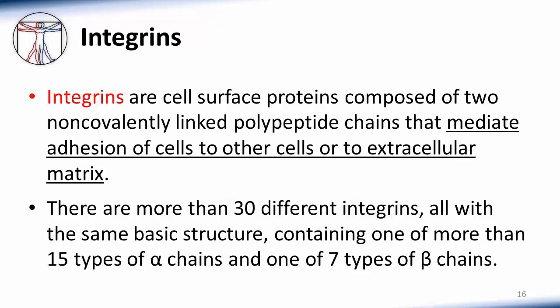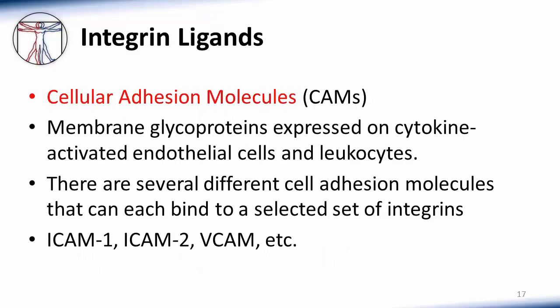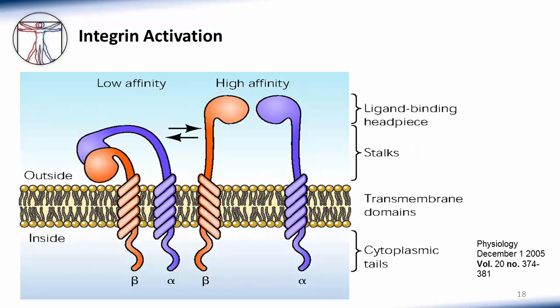The second type of adhesion molecules are the integrins. Integrins are cell surface proteins composed of two non-covalently linked polypeptide chains that mediate adhesion of cells to other cells or to the extracellular matrix. There are more than 30 different integrins, all with the same basic structure containing one of more than 15 types of alpha chains and one of seven types of beta chains. The ligands for integrins are known as cellular adhesion molecules or CAMs — membrane glycoproteins whose expression is stimulated by inflammatory cytokines and pattern recognition receptors. Integrins respond to intracellular signals by rapidly increasing their affinity for ligands. They function like switchblades: in the resting state they are folded, but when activated they spring open into a high-affinity state. One of the major signals triggering this is provided by chemokines.